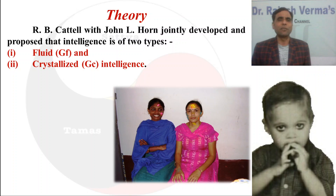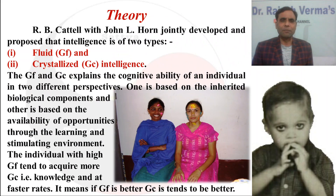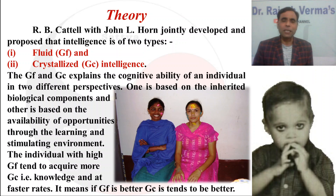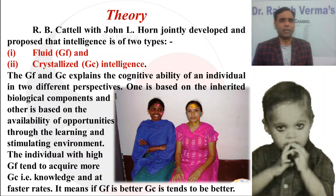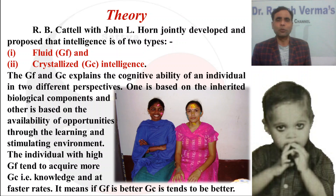GF stands for General Fluid and GC for General Crystallized intelligence. Both types explain the cognitive ability of an individual from two different perspectives. One is based on inherited biological components, and the other is based on the availability of opportunities through learning and stimulating environment — meaning the outcome of the type of socio-cultural environment you are living in.